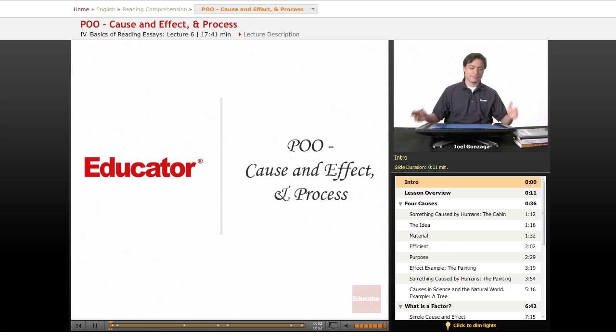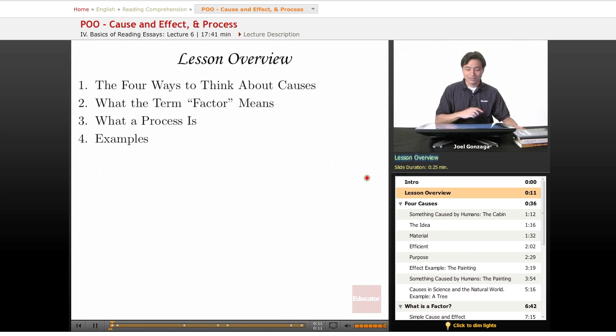Welcome back to Educator.com and our final pattern of organization, the somewhat abstract and not always easy to understand cause and effect. In this lesson, we're going to go over the four ways to think about causes, what the term factor means when writers talk about several factors in some phenomena, what a process is, and then I'll give you two examples.